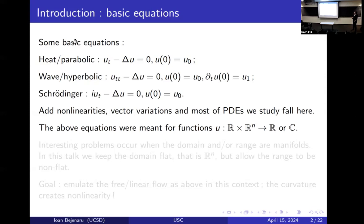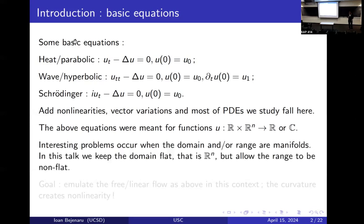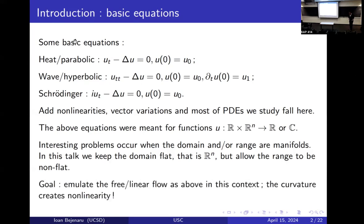You can always take the functions to be complex — for Schrödinger you are forced to have complex-valued functions. A lot of interesting problems occur when the domain or the range of these maps can be a manifold. In this talk, I will keep the domain flat, but allow the range to be non-flat.